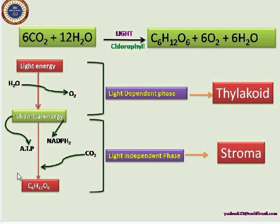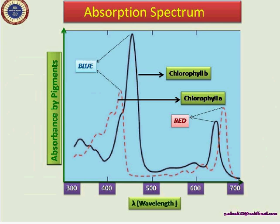The produced chemical energy — ATP and NADPH2 — is further utilized to reduce atmospheric carbon dioxide into glucose. That is designated as the light-independent phase, which takes place in the stroma of the photosynthetic apparatus, that is, the chloroplasts.